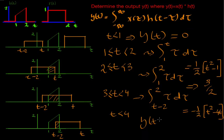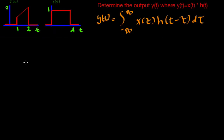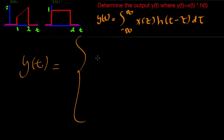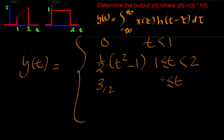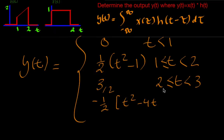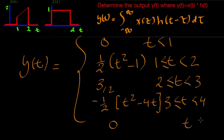So y(t) equals: zero when t is less than one; one half t squared minus one when t is greater than or equal to one and less than two; three over two when t is greater than or equal to two and less than three; one half t squared minus four t when t is greater than or equal to three and less than four; and zero when t is greater than or equal to four.